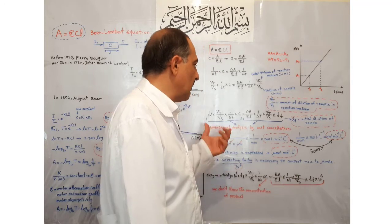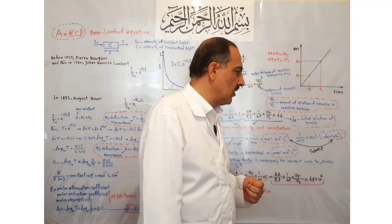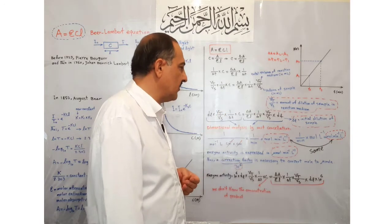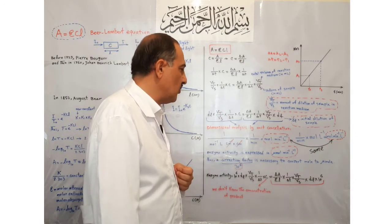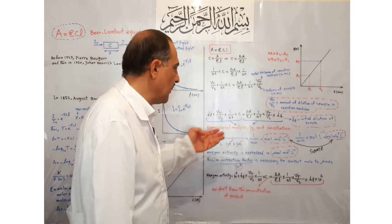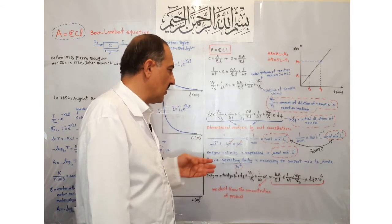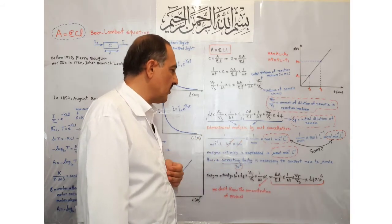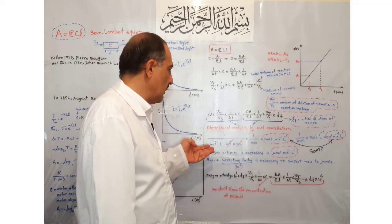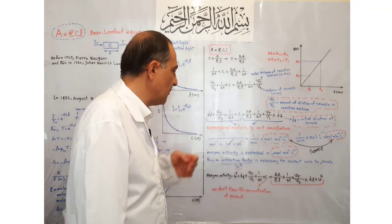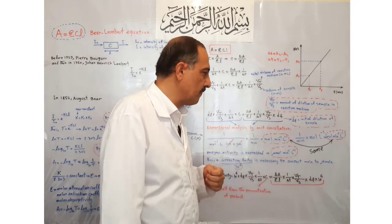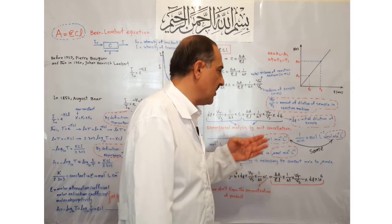For the right side of this equation: the dilution factor is unitless; the ratio of Vt to Vs is unitless; ΔT has the unit of minutes in the denominator; ΔA is unitless because absorbance is unitless; epsilon (ε) has the unit of liters per mole per centimeter, written in the denominator; and L has the unit of centimeters, also in the denominator. Centimeters cancel with inverse centimeters, and inverse moles move to the numerator. So the final unit of the right side is also moles per minute per liter. Both sides have the same unit, confirming the equation is correct.